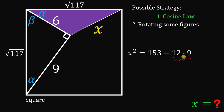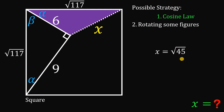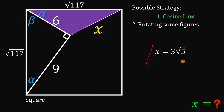12 times 9 is 108, and 153 minus 108 is 45. Taking the square root of both sides — and since x is a length, we take the positive value — x equals the square root of 45. Simplifying: 45 equals 9 times 5, and the square root of 9 is 3, so x equals 3 times the square root of 5. That's the answer using our first method: the cosine law.